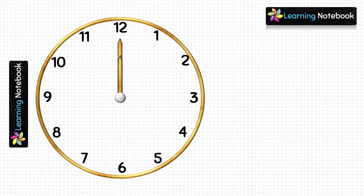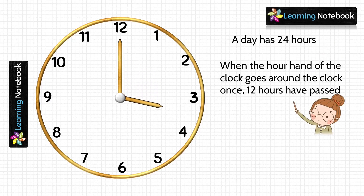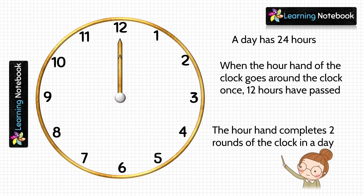A day has 24 hours. When the hour hand of the clock, which is the short hand, goes around the clock once, 12 hours have passed. As you can see here in this clock, when the hour hand moved around the clock once, 12 hours had passed. So students, the hour hand completes 2 rounds of the clock in 1 day.